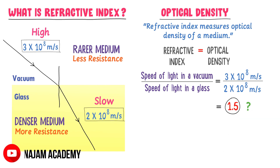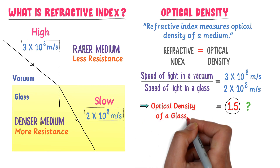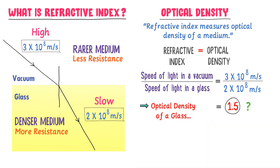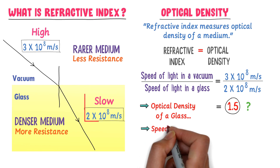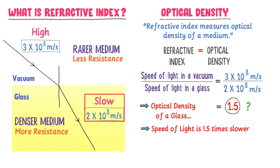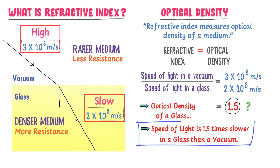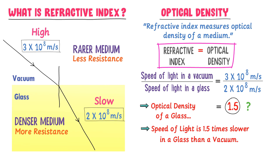What does this 1.5 mean? Firstly, it shows the optical density of glass relative to vacuum. Secondly, it shows that the speed of light is 1.5 times slower in glass than in vacuum. Hence, optical density and refractive index are the same thing — two sides of the same coin.